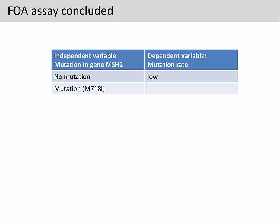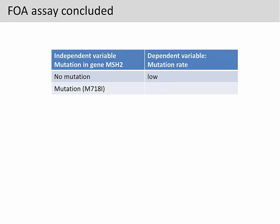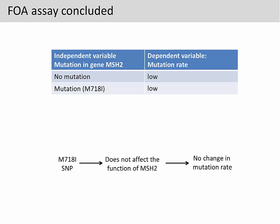When we introduce the mutated MSH2 into yeast, if the mutation rate is higher compared to the control group, we can conclude that this particular SNP increased the mutation rate, or that the SNP abolished the function of MSH2. However, if we didn't observe a higher mutation rate and the mutation rate stayed low like the control group, this means that this SNP does not cause any change in mutation rate, or that this SNP does not affect the function of MSH2.